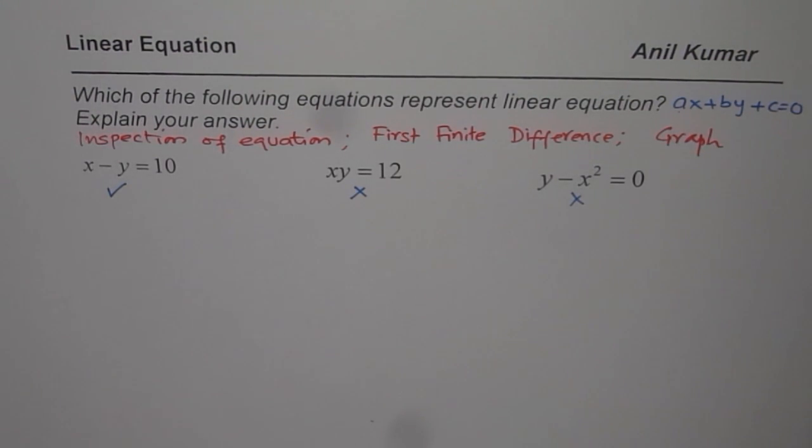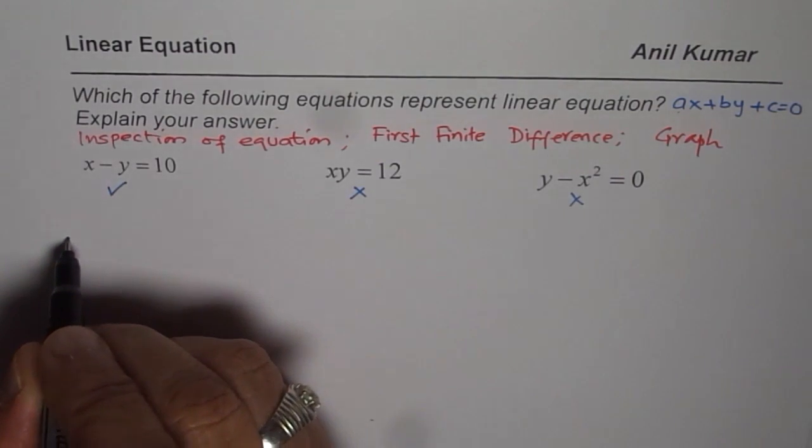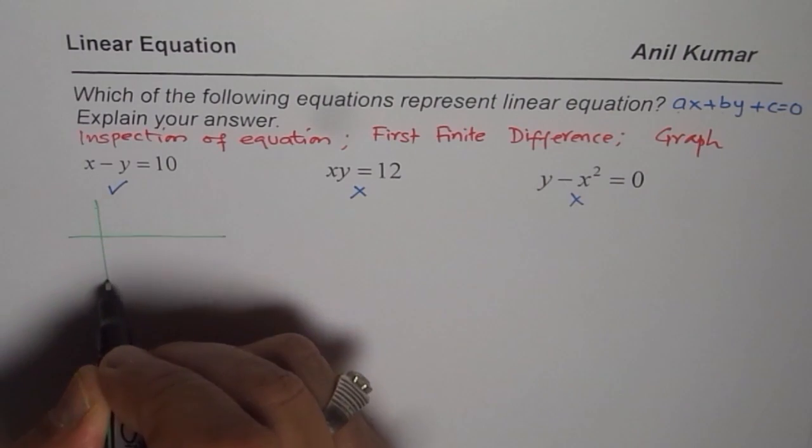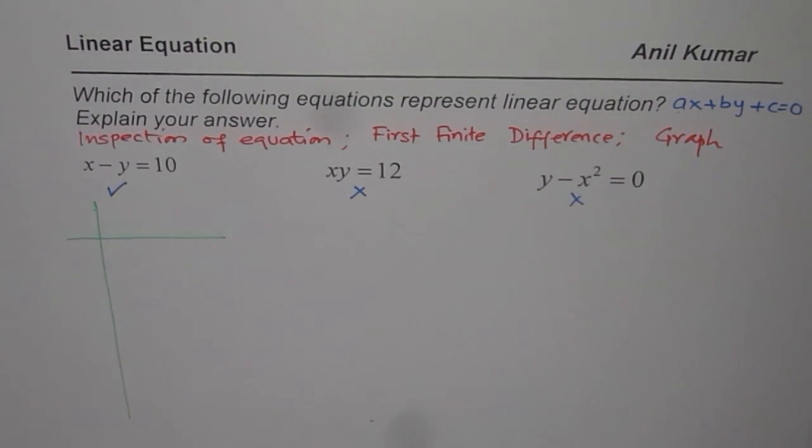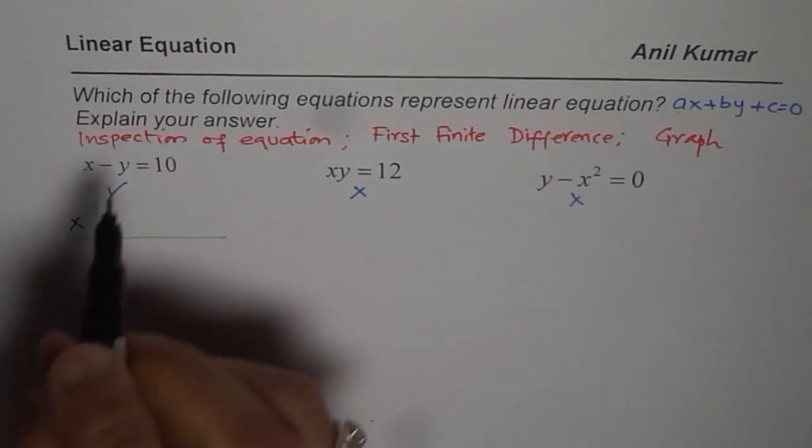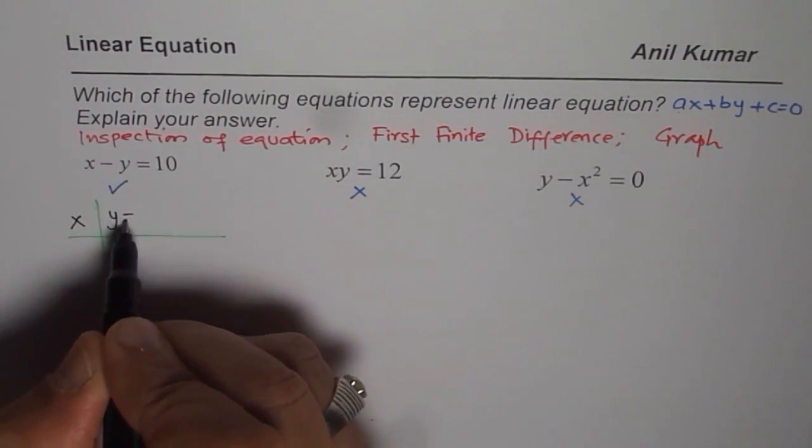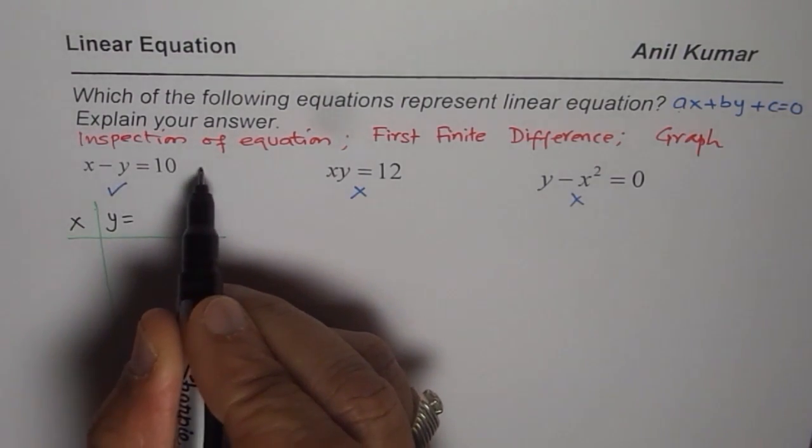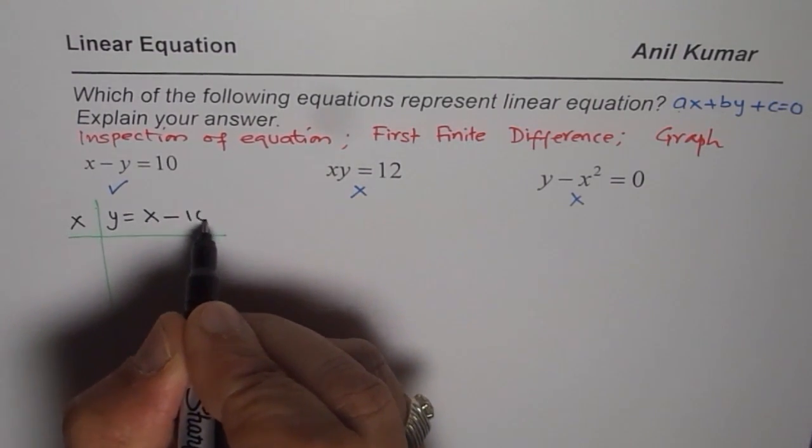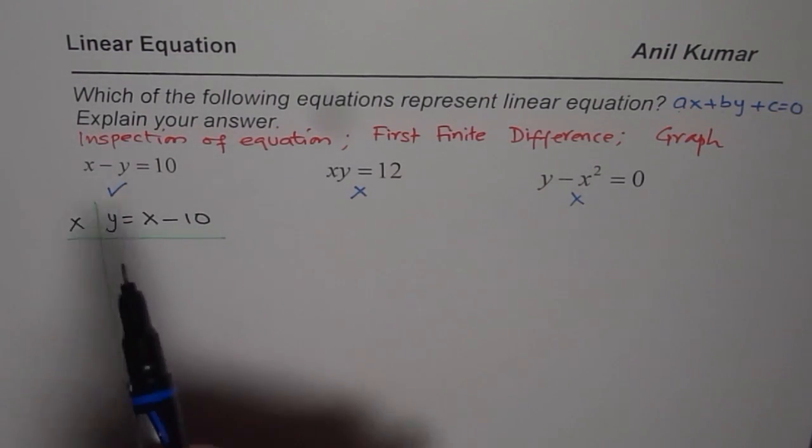And now, let us also prove it using first finite difference. What we will do here is that we will take some points of x and y, and then check the finite difference. We can rewrite this equation. We will take some values of x. We can rearrange and then write y equals to, bringing y to the right side will give us x minus 10.